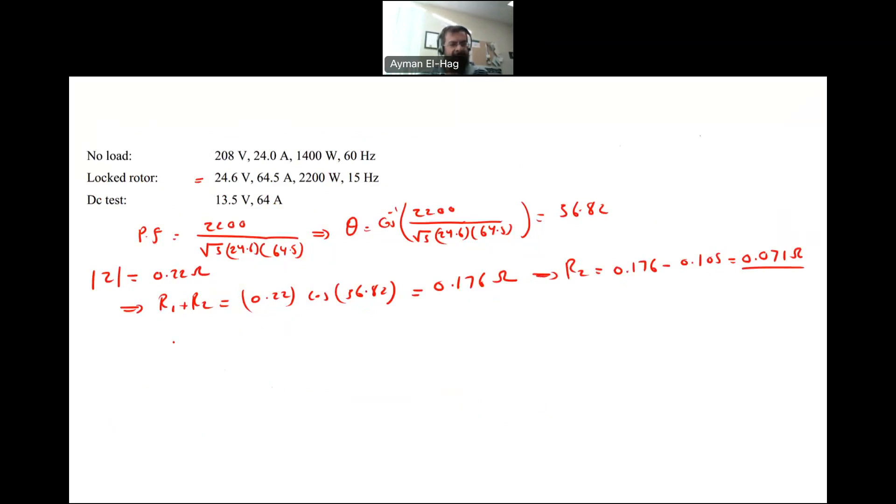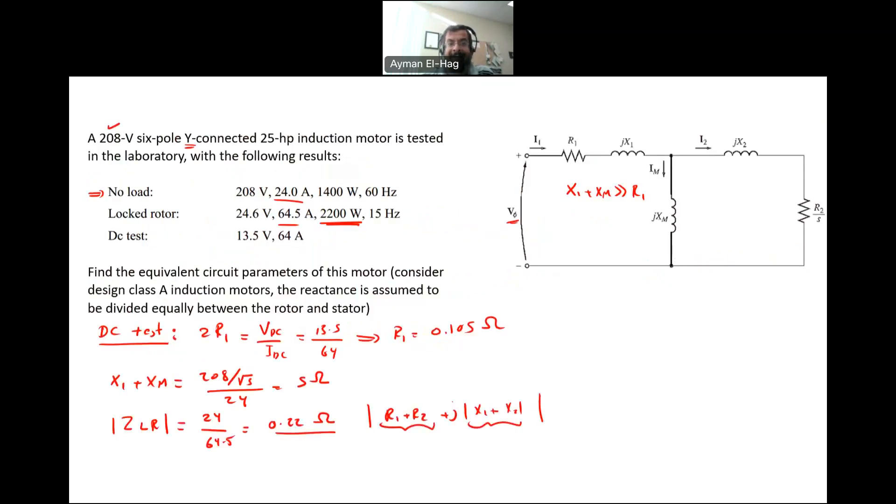Now let's find X1 plus X2, which equals 0.22 sine 36.82. This gives me a total value equal to 0.132 ohms. Now this reactance 0.132 is done at 15 hertz. The locked rotor test, we do it at a reduced frequency.